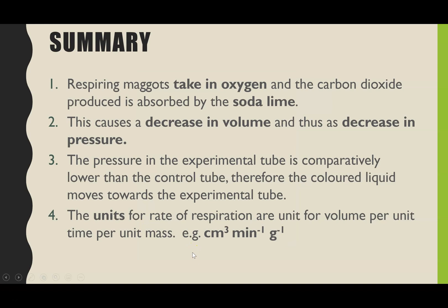So that is our respirometers, one of the ways to measure the rate of respiration. So just some of the key points to remember. The respiring maggots, they are absorbing, they're taking in that oxygen for respiration. The carbon dioxide which is produced is equal to the volume of oxygen taken in, but it's absorbed by the sodalime. That then causes a decrease in volume of the gases, and therefore a decrease in pressure of the gases in the experimental tube.